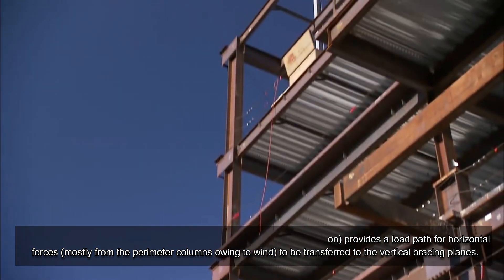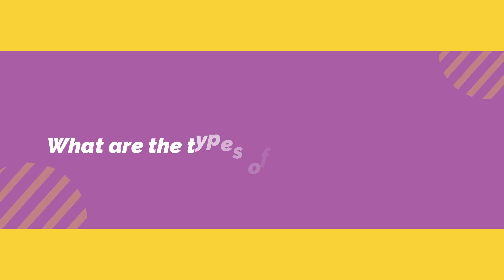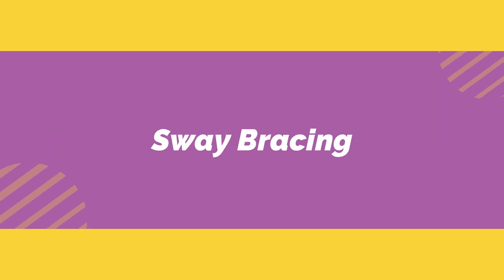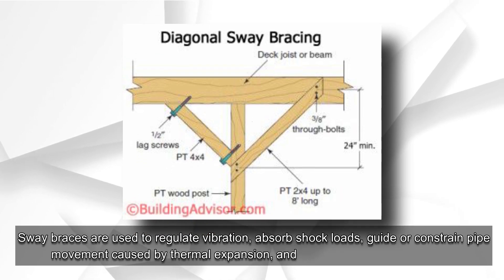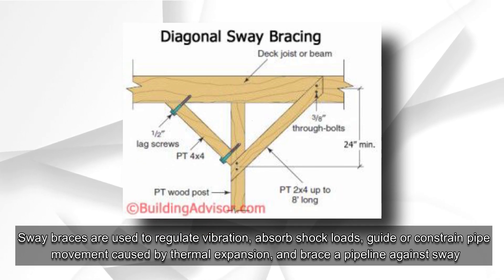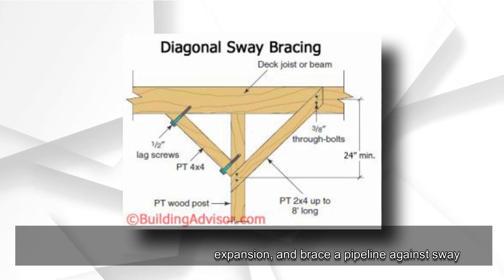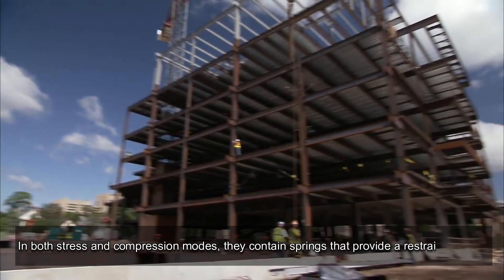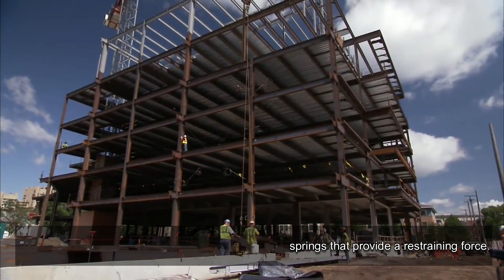Horizontal forces, mostly from the perimeter columns owing to wind, are transferred to the vertical bracing planes. What are the types of bracing systems? Sway bracing: sway braces are used to regulate vibration, absorb shock loads, guide or constrain pipe movement caused by thermal expansion, and brace a pipeline against sway in both stress and compression modes. They contain springs that provide a restraining force.